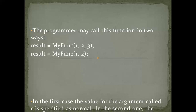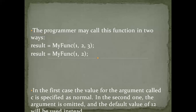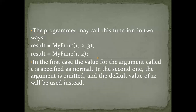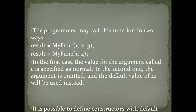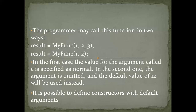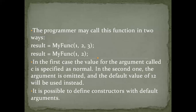A programmer may call this function in two ways. In the first way, a value for the argument is specified as normal. In the second way, the argument is omitted and the default value will be used instead. It is also possible to define constructors with default arguments.